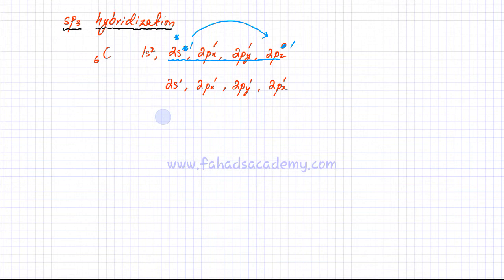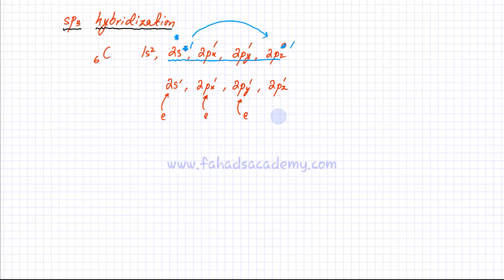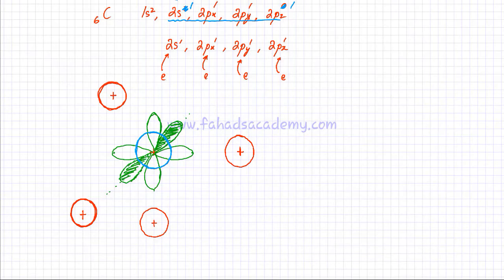Four different atoms would be attracted by carbon, and carbon would try to take one electron from each of the four atoms. I've drawn carbon in the middle — it's the green atom in the middle.